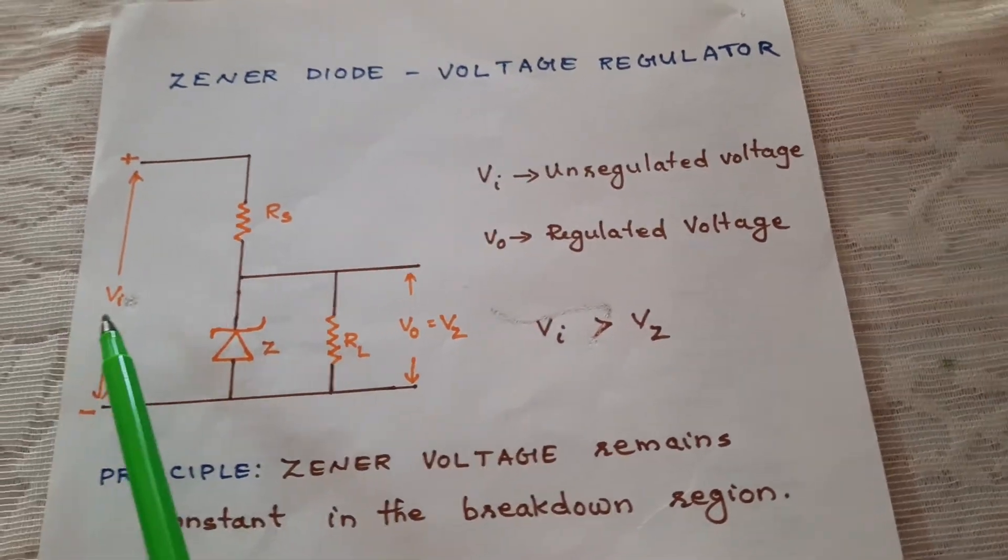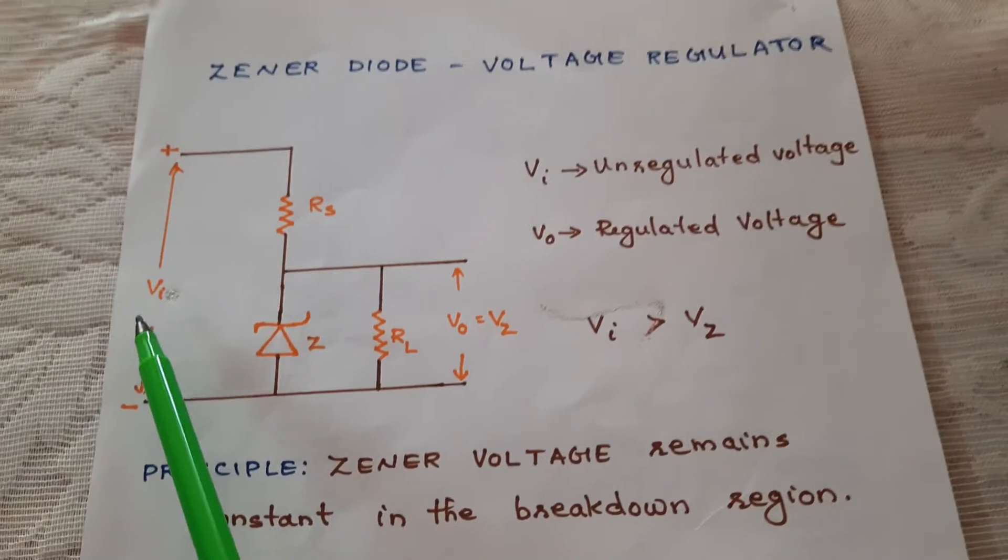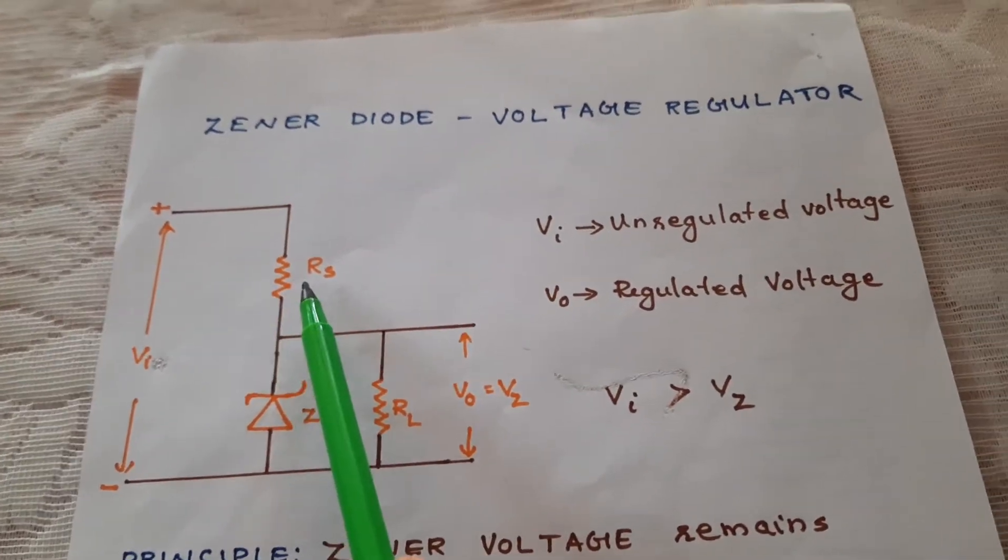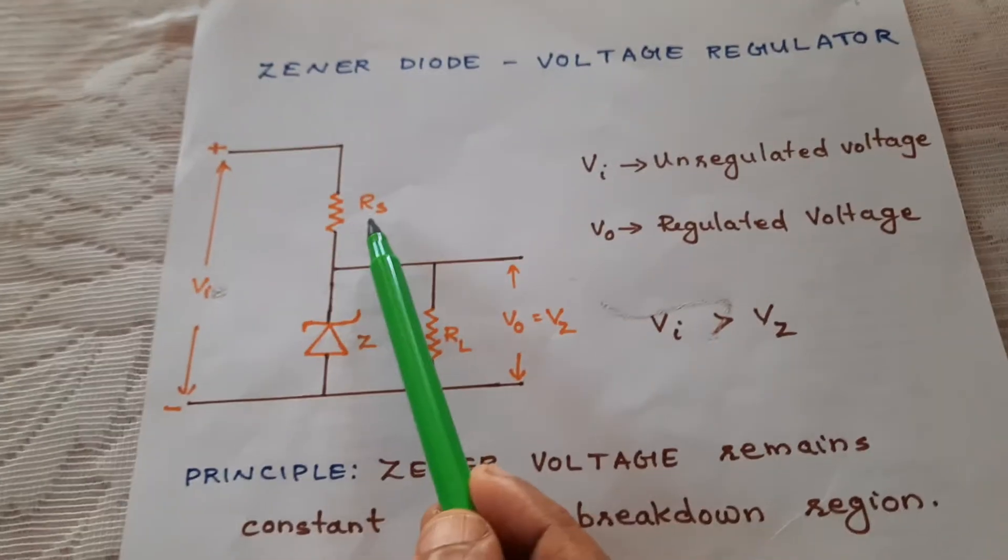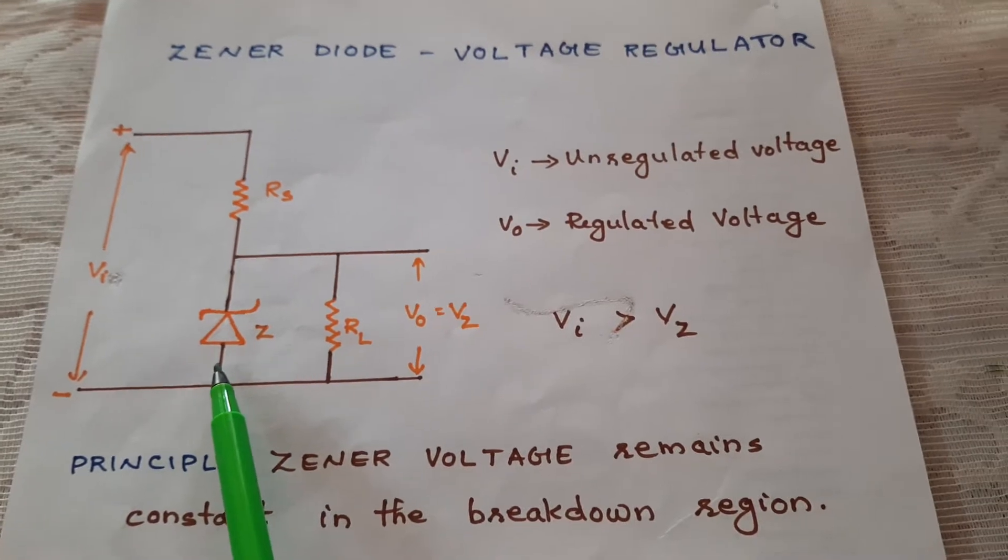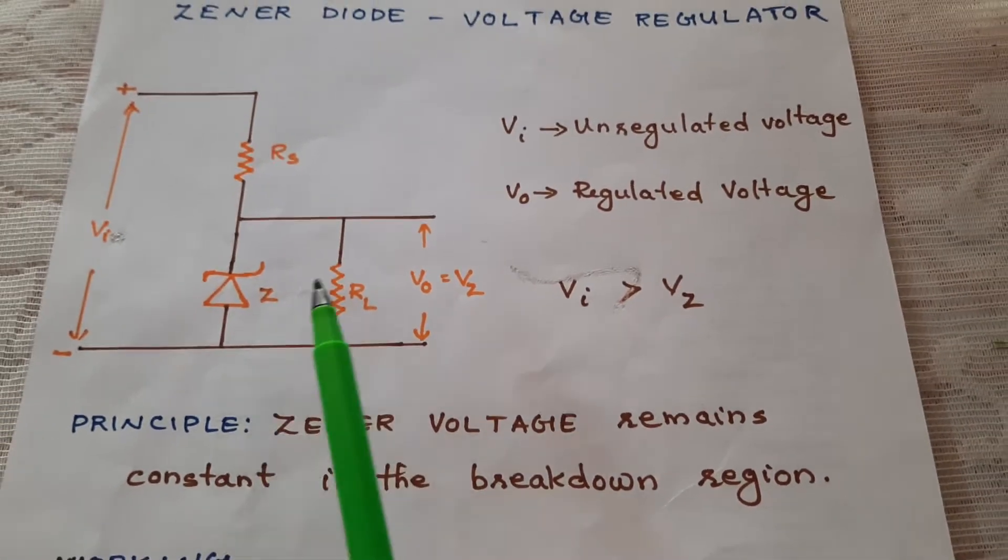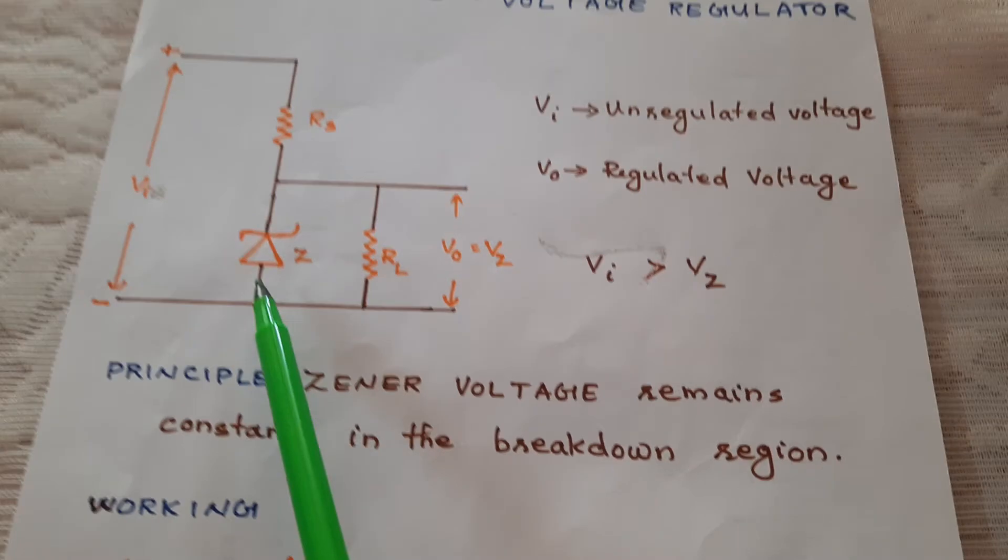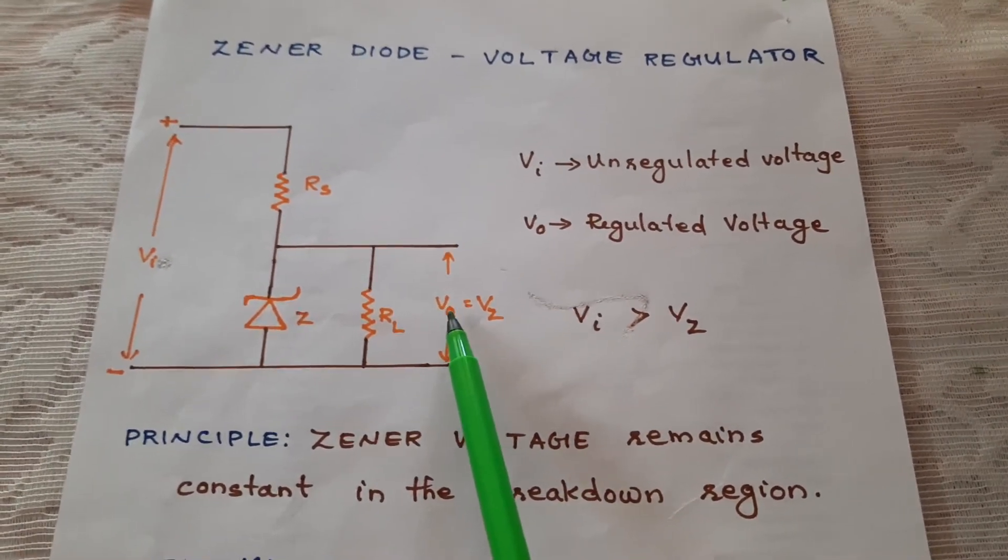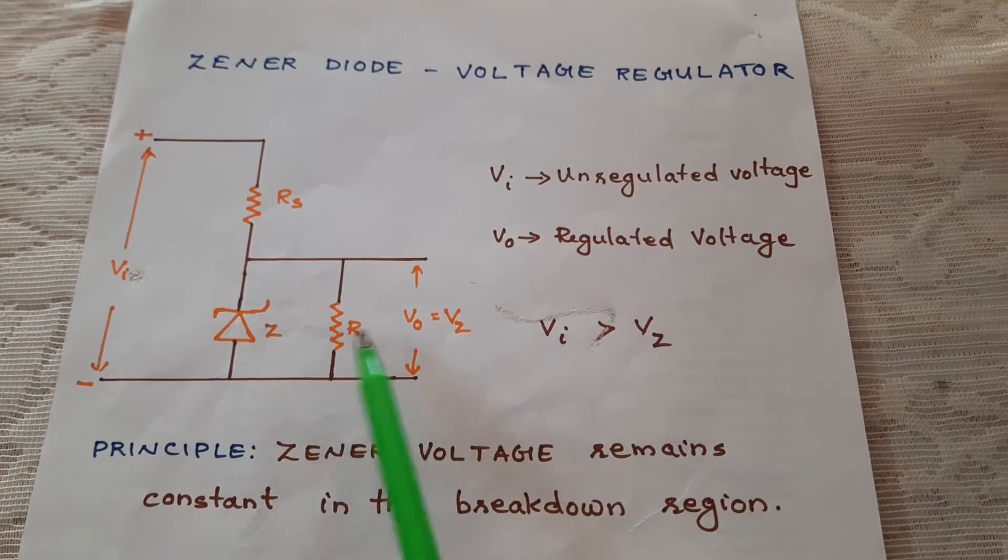The unregulated voltage is the input voltage. It is given to a circuit which contains a resistor RS in series with a Zener diode. The load resistor is connected in parallel with the Zener diode, and the output voltage is taken parallel to the load resistor.